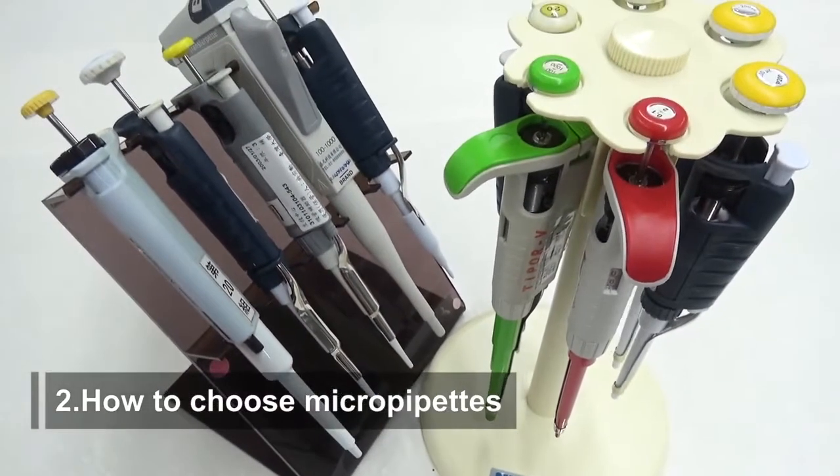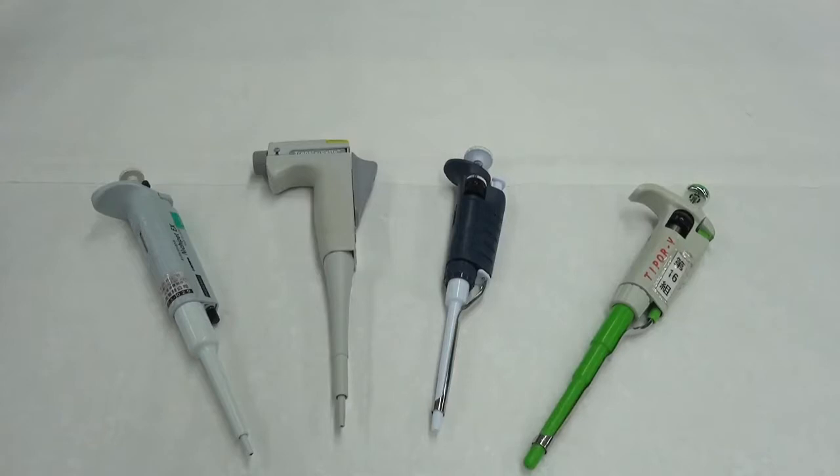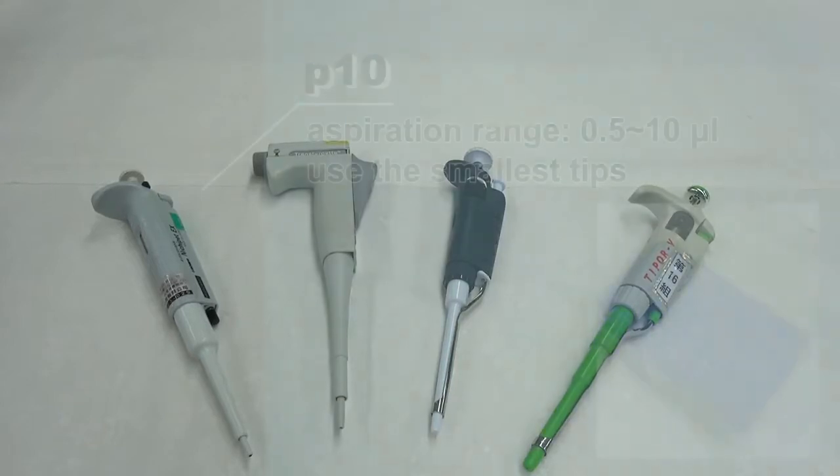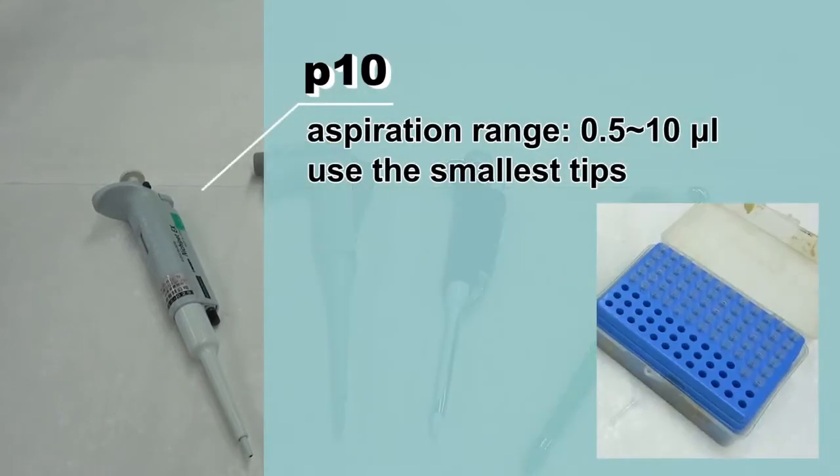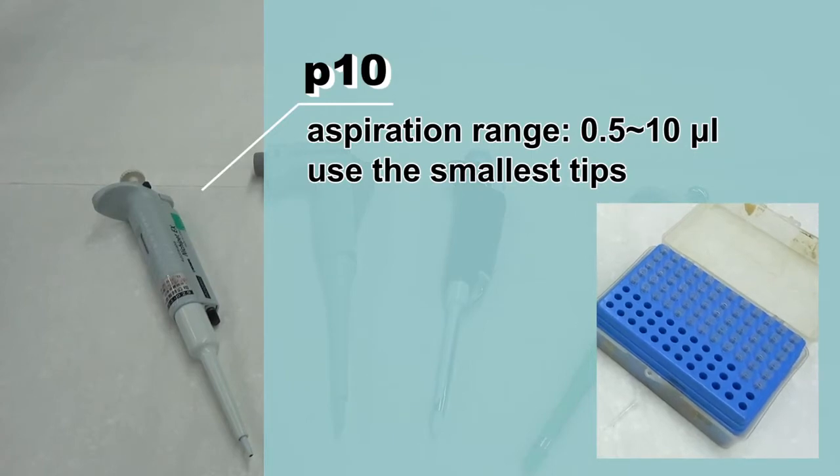How to choose MicroPipets. Regular MicroPipets include four types. The P10, which has an aspiration range of 0.5 to 10 microliter and uses the smallest tips.